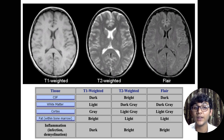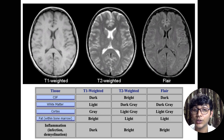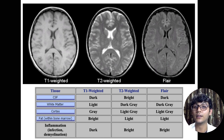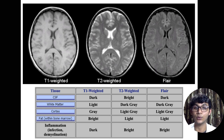The FLAIR image in this diagram will be discussed in detail shortly. For now, notice that CSF and other tissues on the FLAIR image are dimmed out — generally blacker and grayer than on T1 and T2. The reason for this will be explained in the upcoming slides.